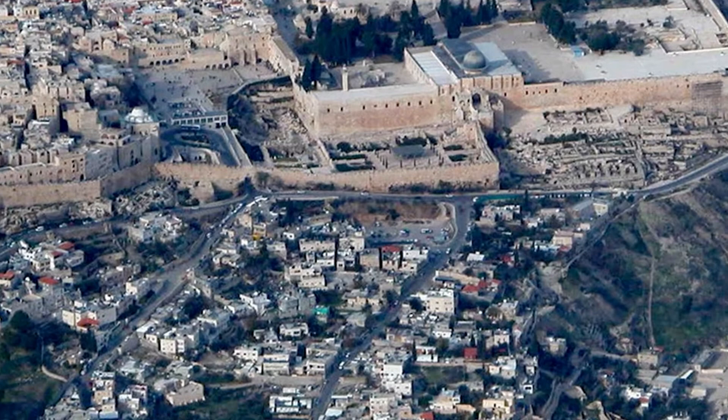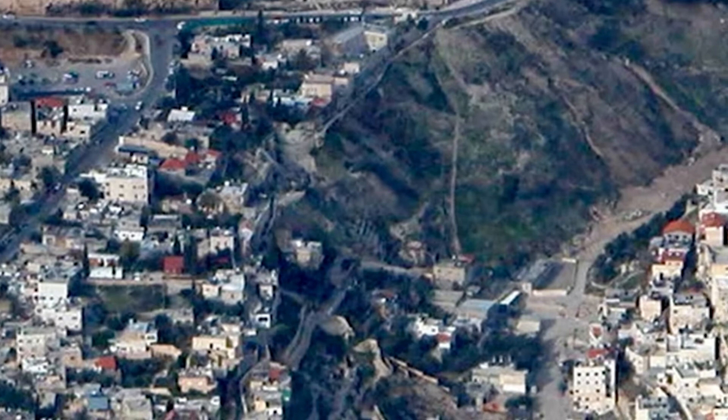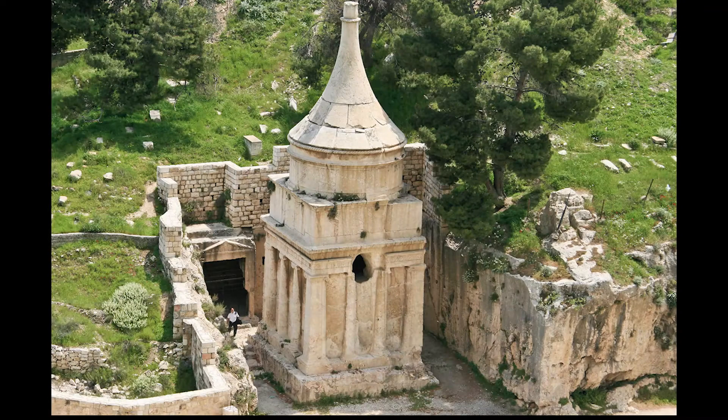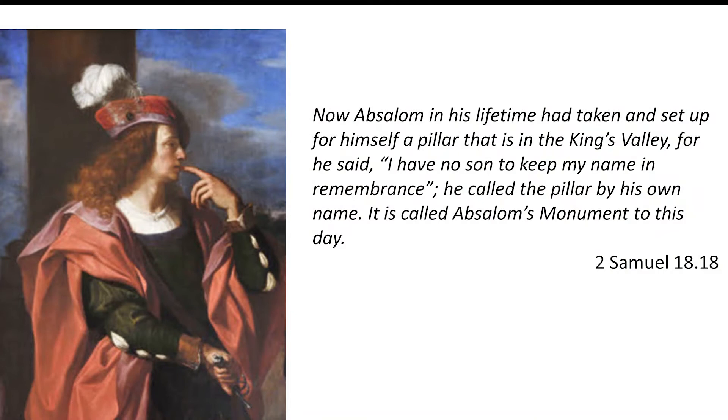Today's lecture by Dr. Nathan MacDonald begins by looking at a large tomb on the lower slope of Mount Olives. The Mount of Olives is the most important burial site in Judaism. This tomb is known as Absalom's monument. Absalom was the son of King David, one of Israel's earliest kings.